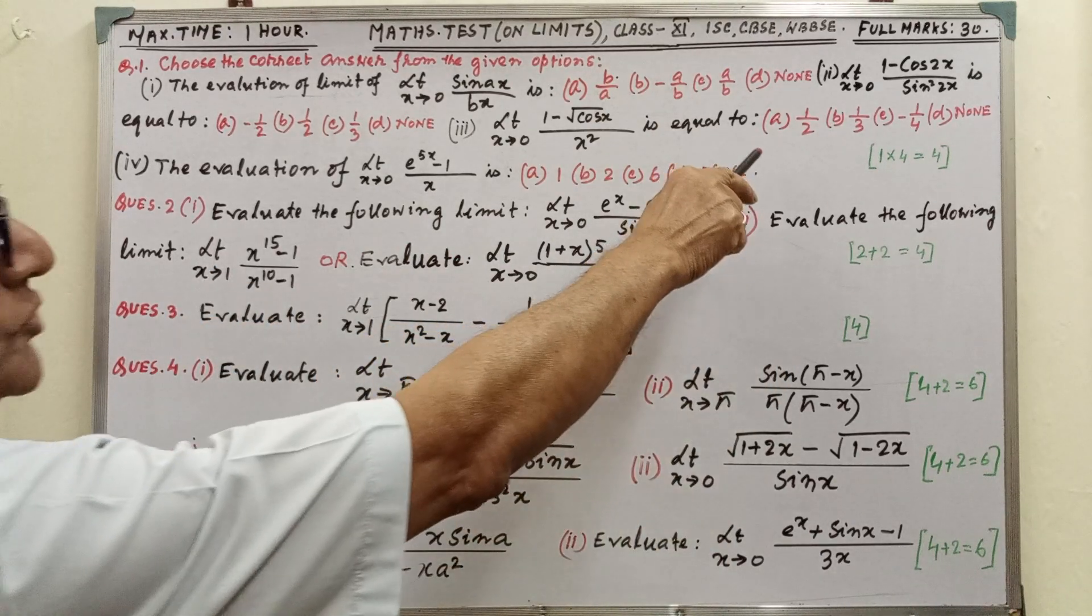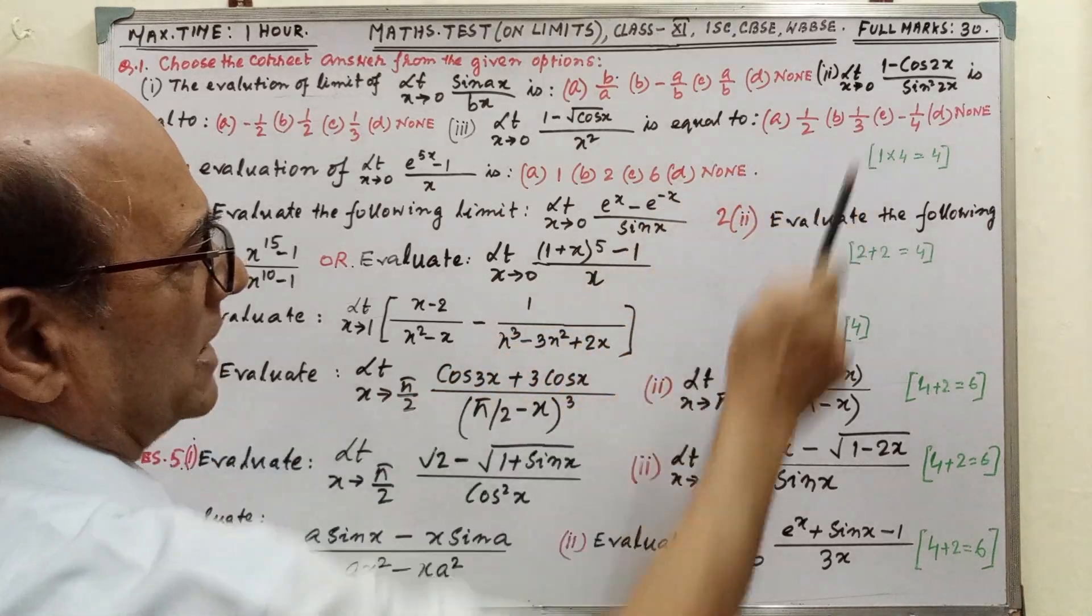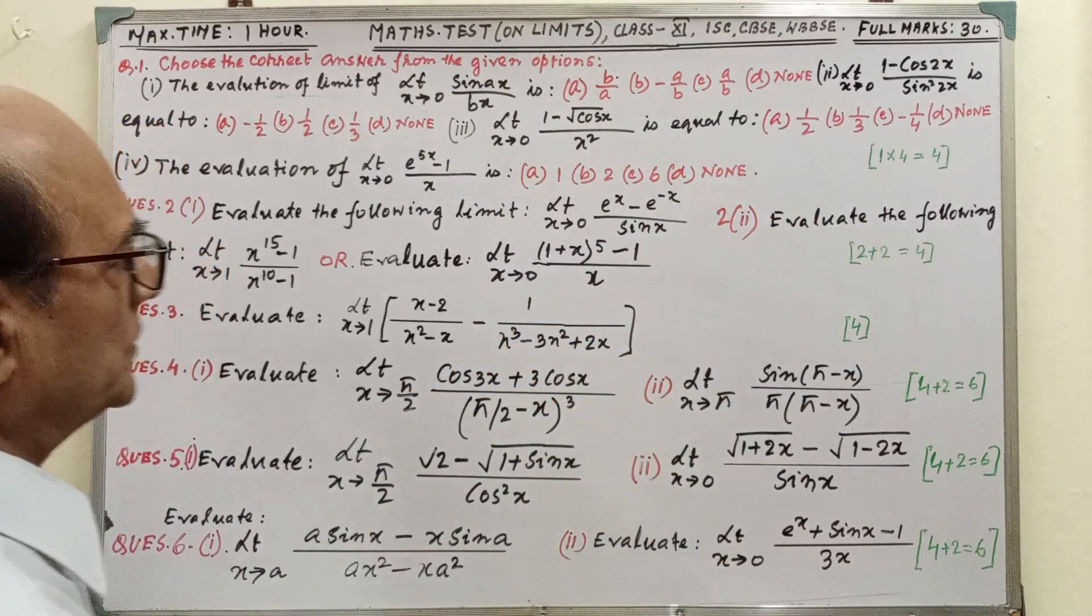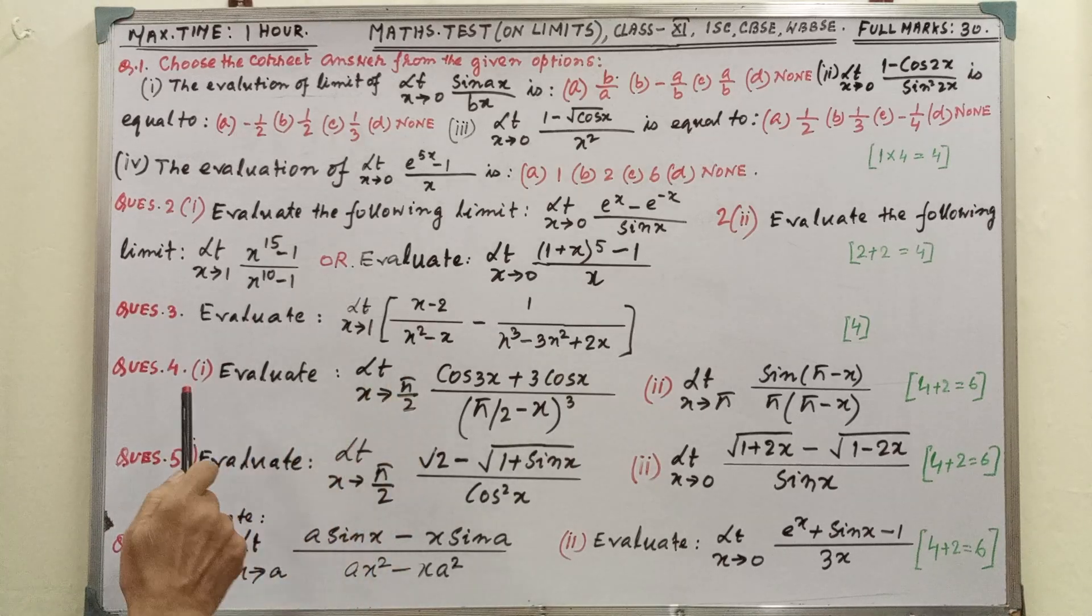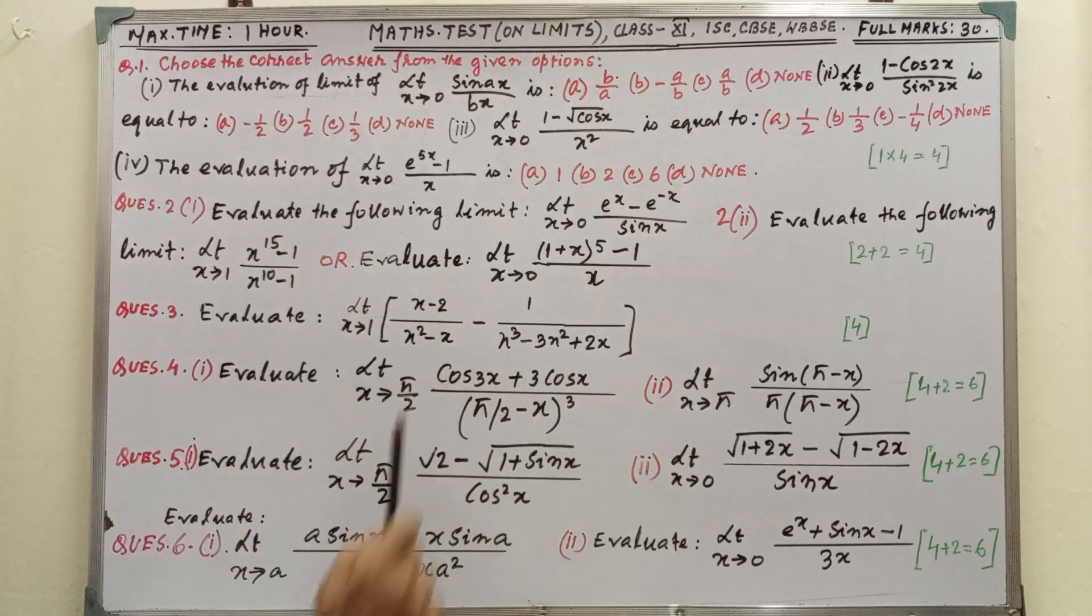Question 1 MCQ is 1 mark for each, total four. Question 3 is a 4 marks question. Question 4 has two parts.